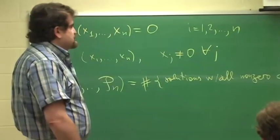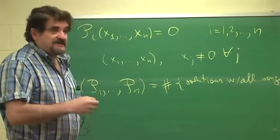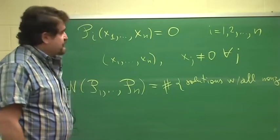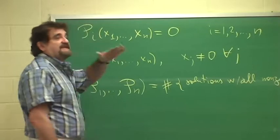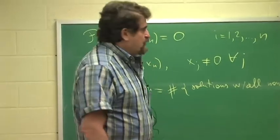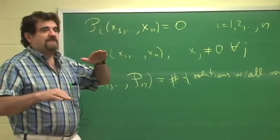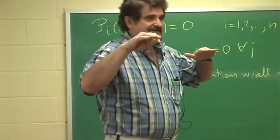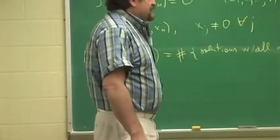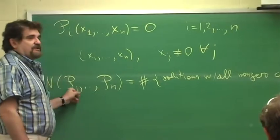The problem as it is set here is more or less hopeless because the number of solutions can be whatever. For example, if I choose all p's to be the same, then there will be infinitely many solutions. Or if I choose two p's to be the same plus one, there will be no solutions. So I need to specify exactly what I mean by the number of solutions.